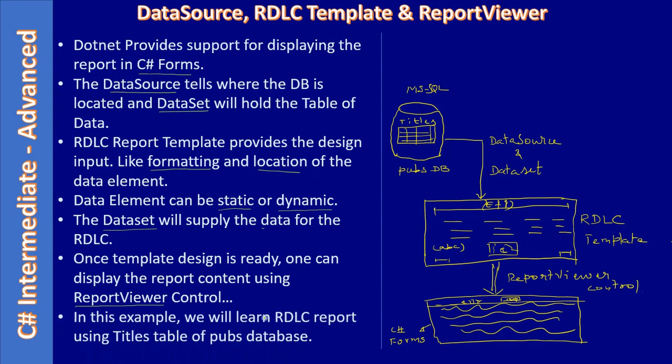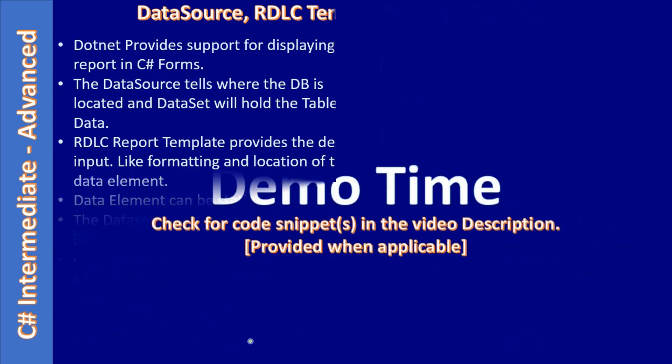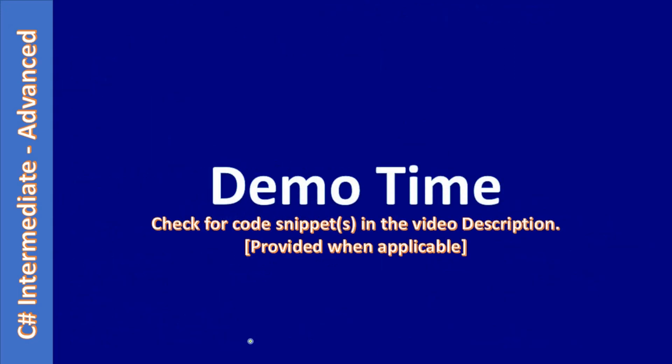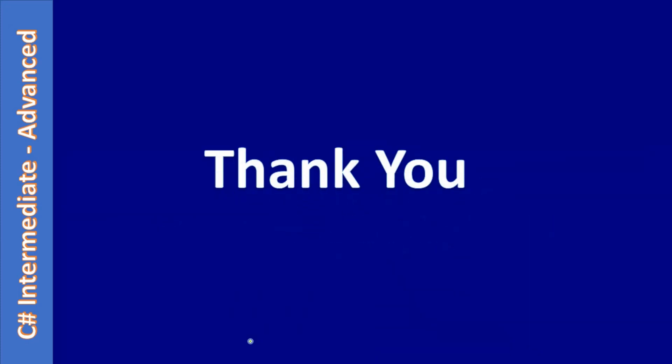In this example we will learn RDLC reports using the titles table of the pubs database. There is no demo in this video — we just learned the basic parts: data source, dataset, RDLC report template, Report Viewer control, and C# form. Those are all the moving parts. Thank you for watching, bye.